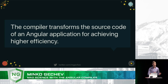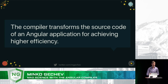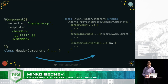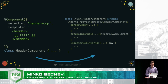In general, the compiler is going to take our Angular application and transform it in a way that it is going to be more efficient in terms of bundle size or in terms of runtime performance. For instance, the compiler is going to take this header component and out of it, it is going to generate another class. This class is going to take care of things such as rendering the component in the most efficient way and also instantiating the component's controller and using it as a context for the change detection mechanism.